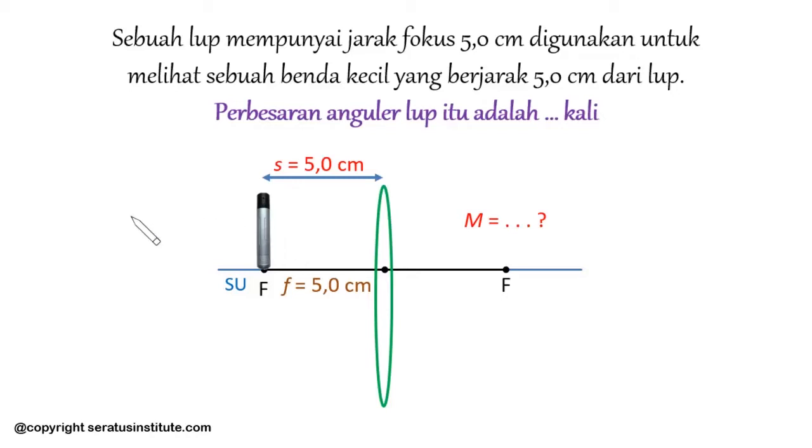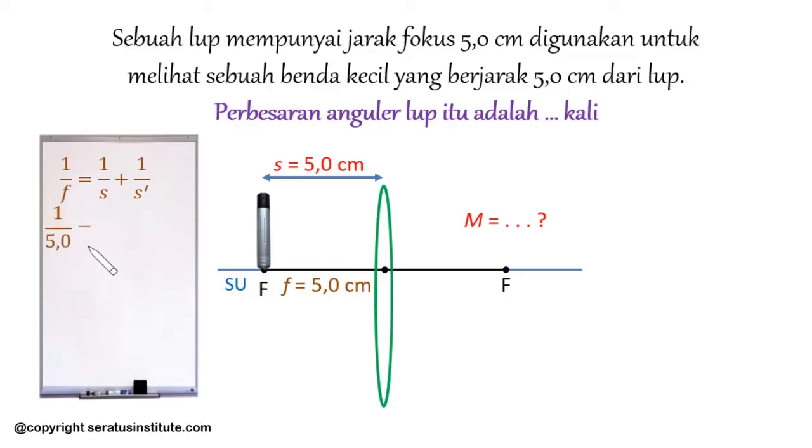How do we do this? We use the general lens formula. Sobat 100 still remember the formula right? The formula is 1/f equals 1/s plus 1/s'. The focal length is 5 cm, object distance is 5 cm. So we get 1/5 equals 1/5 plus 1/s'. To obtain 1/s', we move 1/5 to the other side. When moved to the other side it becomes negative. 1/5 minus 1/5 equals 0.